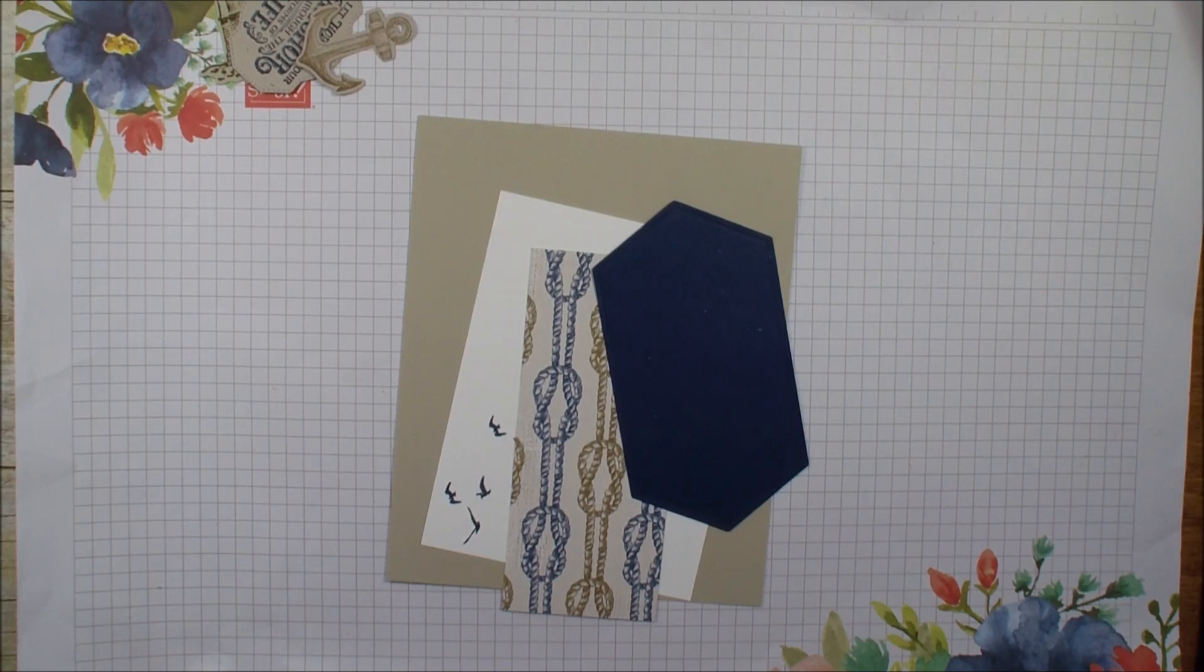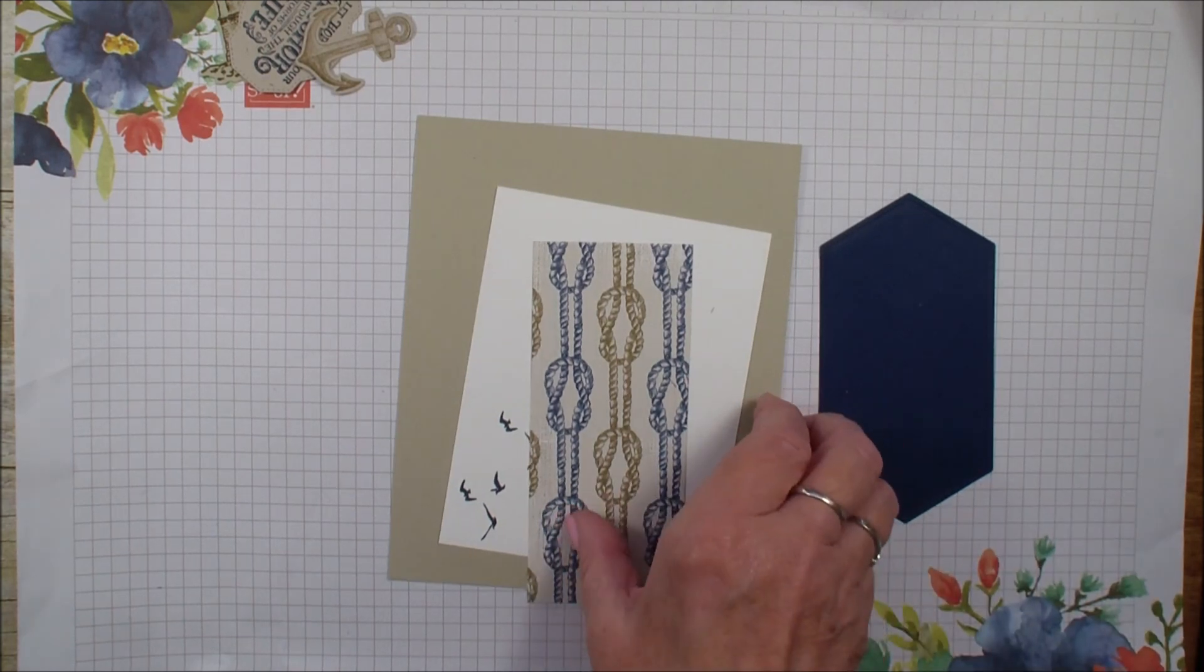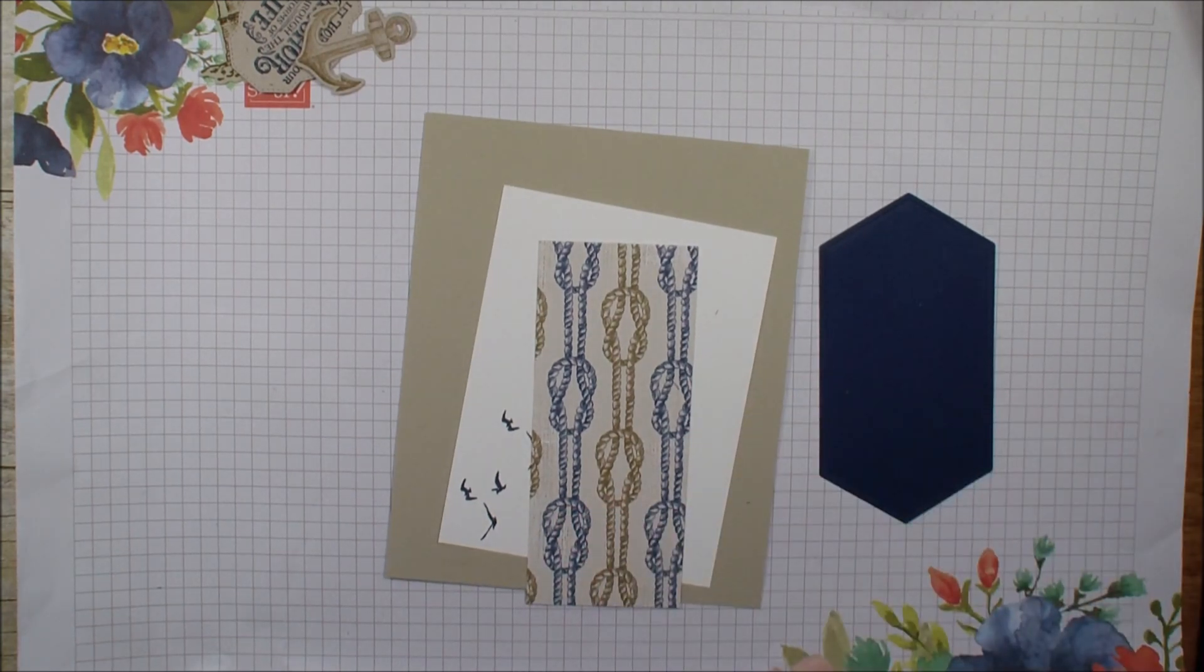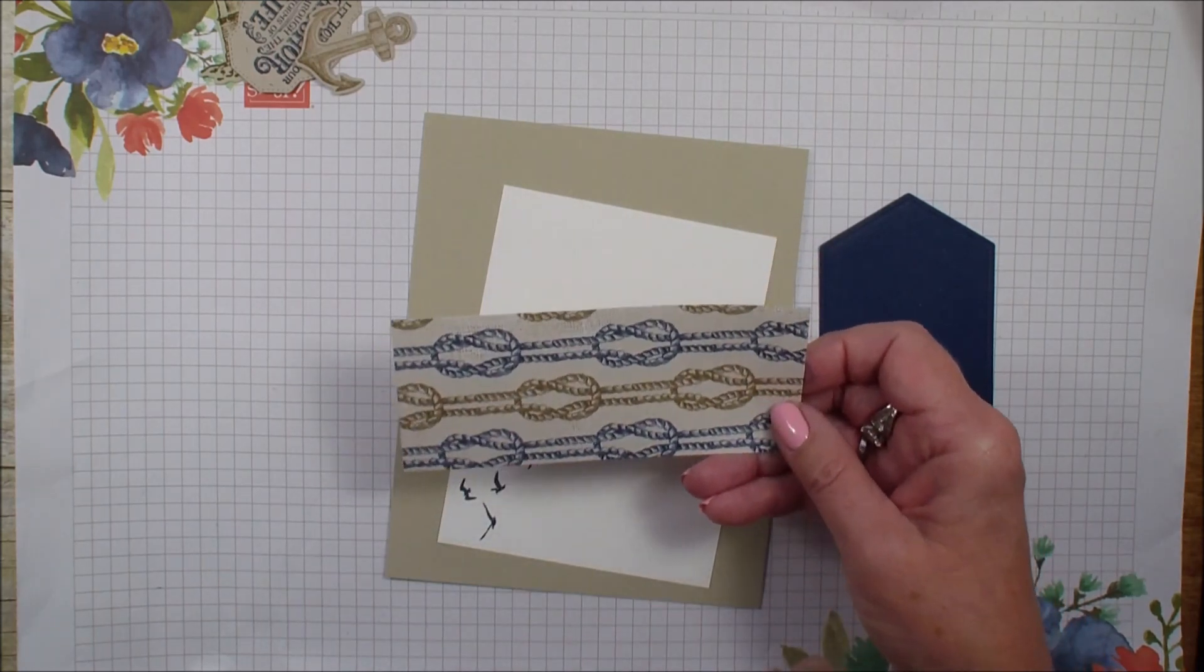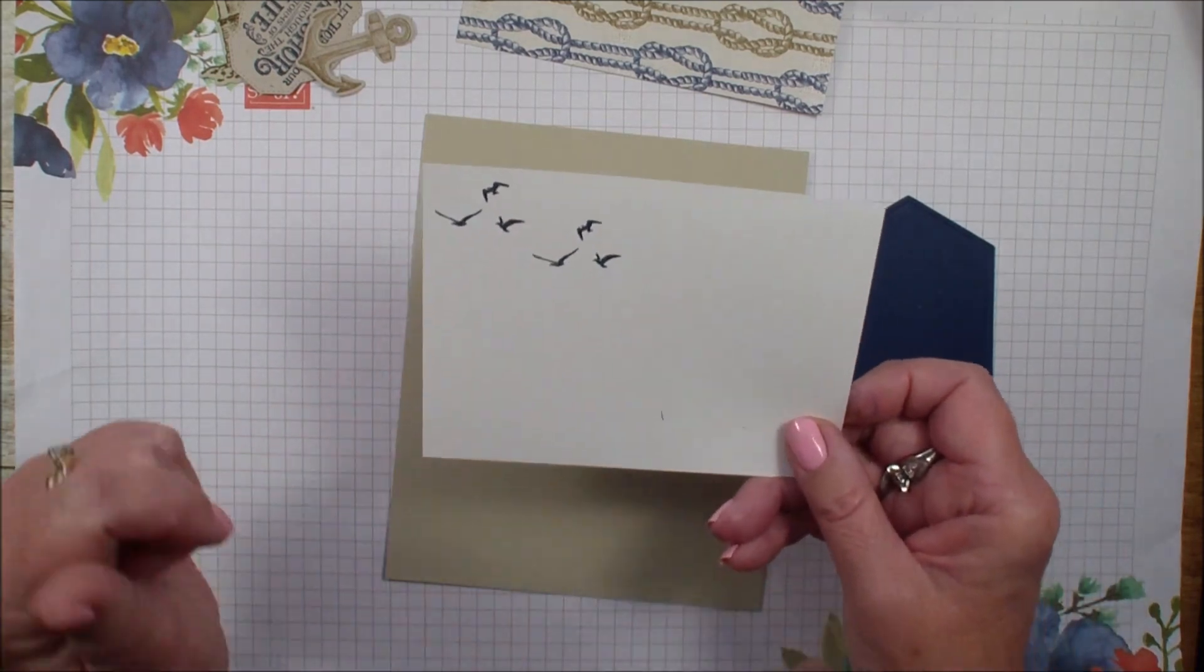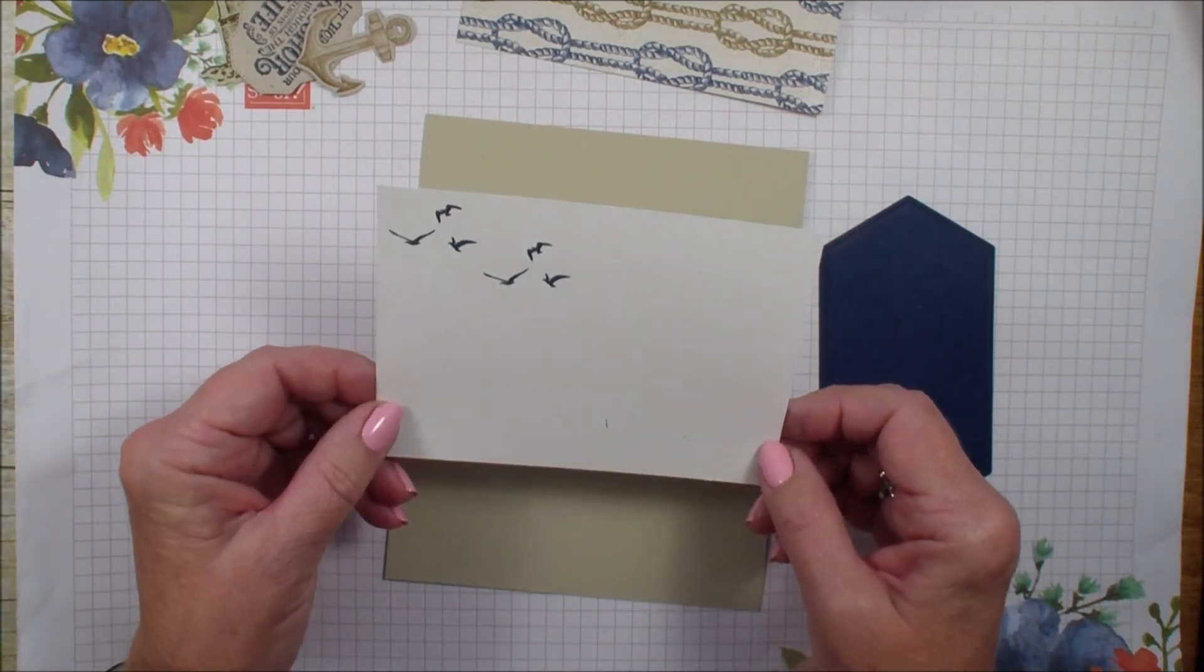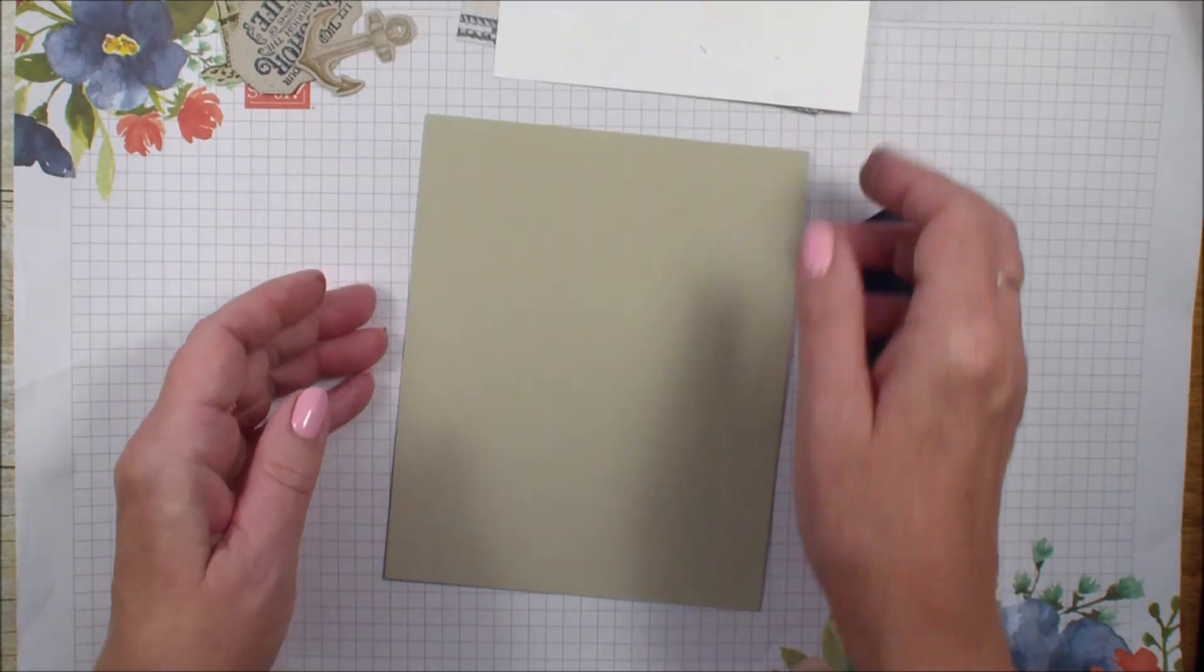So let's go ahead and get started with our card. I have a piece of the Designer Series Paper, Come Sail Away, and this measures two and a quarter by five and a quarter. I have a piece of Whisper White and I stamped the little birds from that Sailing Home stamp set. This measures four by five and a quarter.